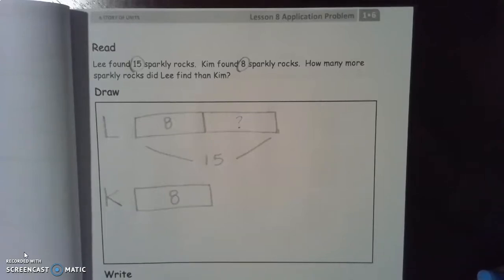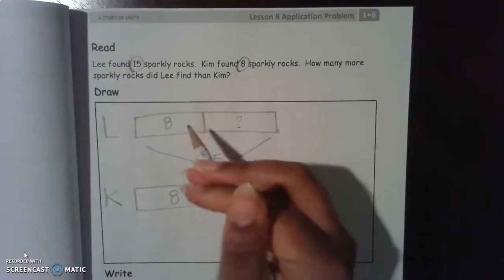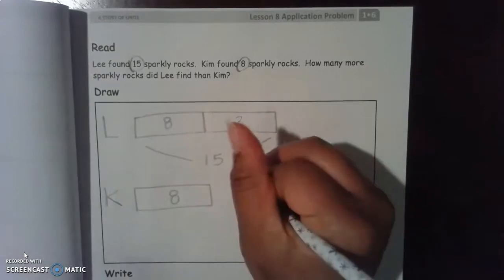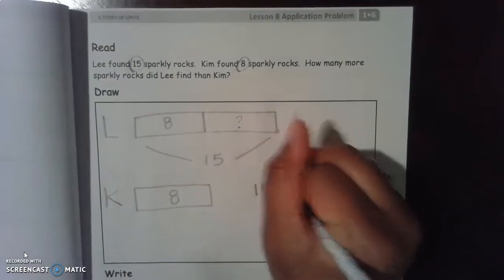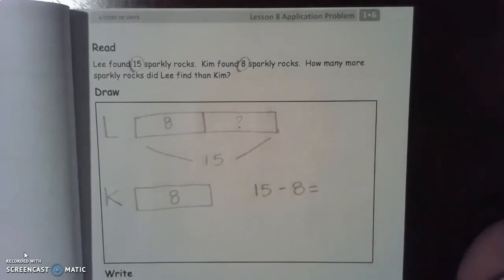Well, like I said before, if we think our number would be smaller than 15, we would subtract. Good. What two numbers would we subtract? 15 and 8. So 15 minus 8 is what? 7. Awesome.